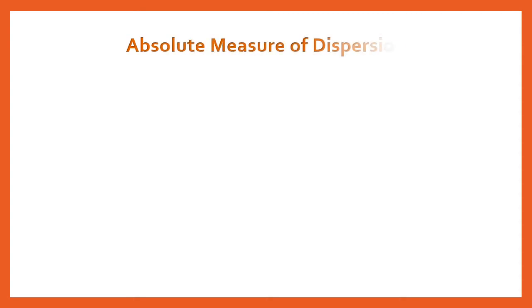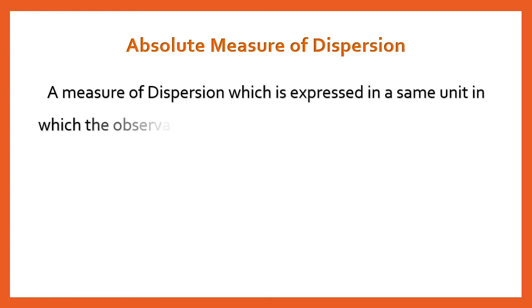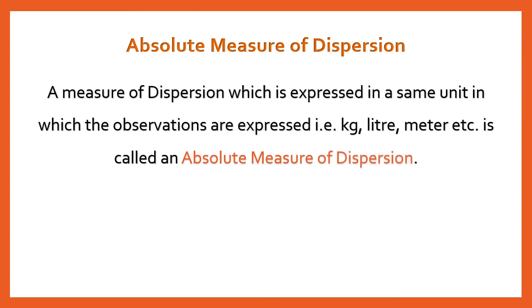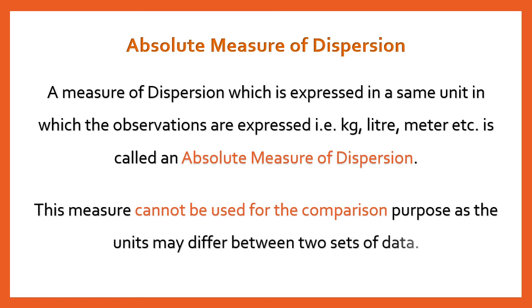The absolute measure of dispersion is expressed in the same units in which the observations are expressed — for example, kilograms, liters, meters, etc. However, the problem with this measure is that it cannot be used to compare two different sets of data expressed in different units, like kilograms versus meters, because those units have no direct relationship.